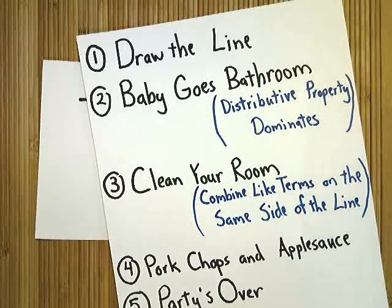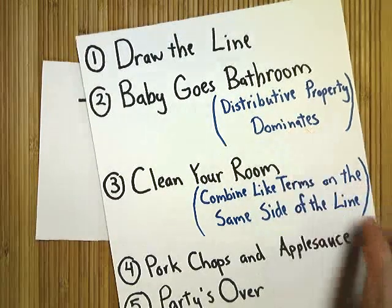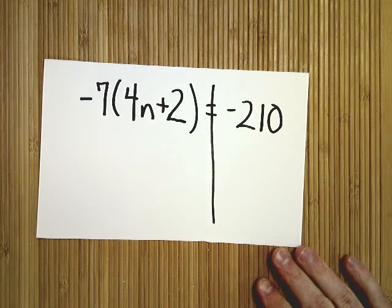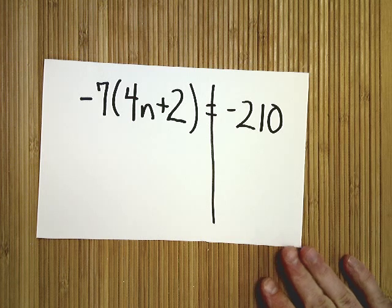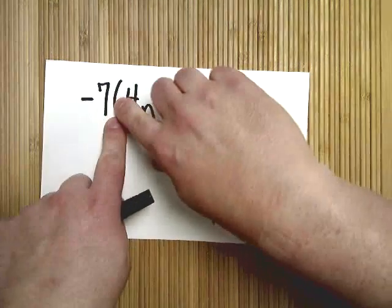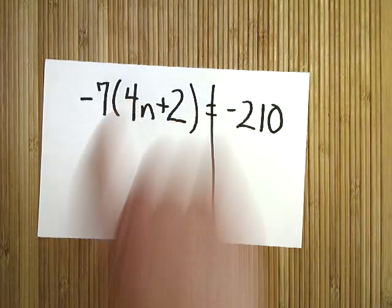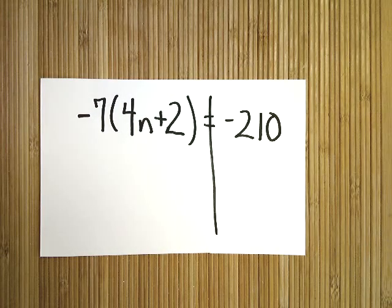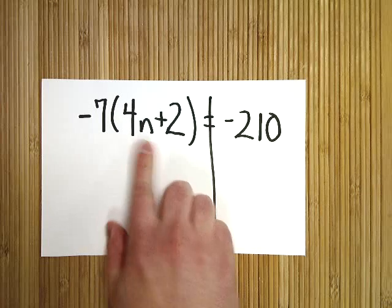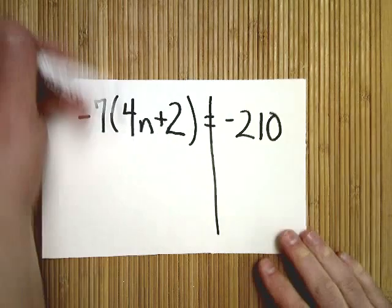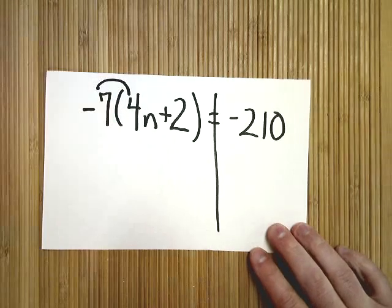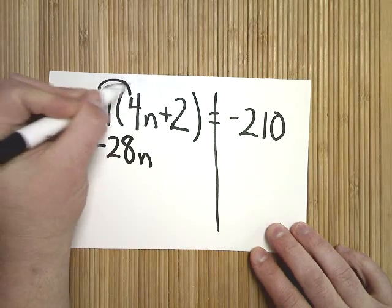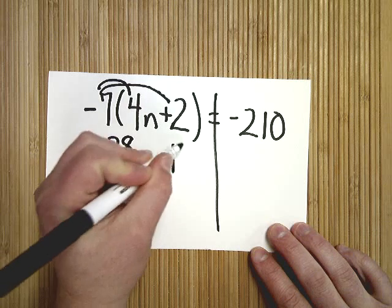The next step is Baby Goes Bathroom, so I have to do distributive property next regardless because it dominates. So I have negative seven times the quantity 4n plus 2. The reason that I know it's multiply is because this negative seven is pushing right up on this parenthesis, and like hamsters, if they're touching they're multiplying. I have to do negative seven times both the 4n and the plus 2, but just not at the same time. Negative seven times 4n is negative 28n, and then negative seven times positive 2 is negative 14.